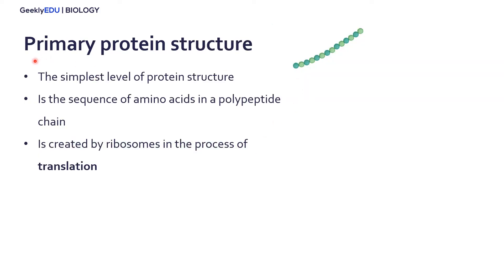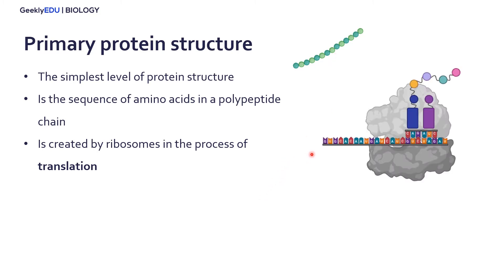Starting with the first level of protein structure, or primary protein structure. This is the simplest level, and it is basically just the sequence of amino acids in a polypeptide chain, which often just looks like little beads along a chain. This is created in the process of translation. Here we have our RNA being read by a ribosome, which is the dark gray protein here in the back, and then the ribosome reads the RNA and strings along the subsequent amino acids into our polypeptide chain shown there.